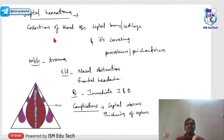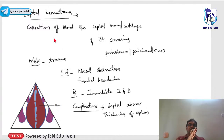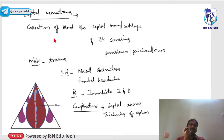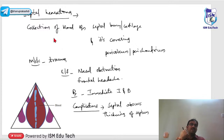In septal hematoma, the patient complains of pain and frontal referred headache. If not operated immediately, the increased pressure on the cartilage impedes its blood supply, causing necrosis and change in nasal shape. Immediate treatment is to give a small nick anteriorly, drain the collection, and relieve the pressure.